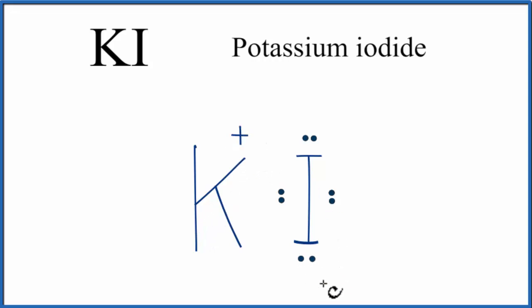The iodine gained that electron, it gained the negative charge, so it has a negative charge. And now we have this positive metal and negative nonmetal. They are attracted together to form an ionic bond.